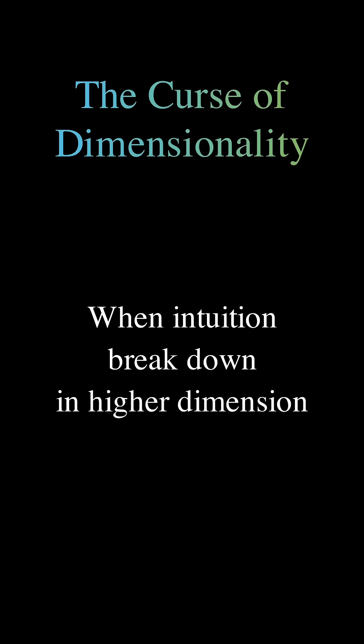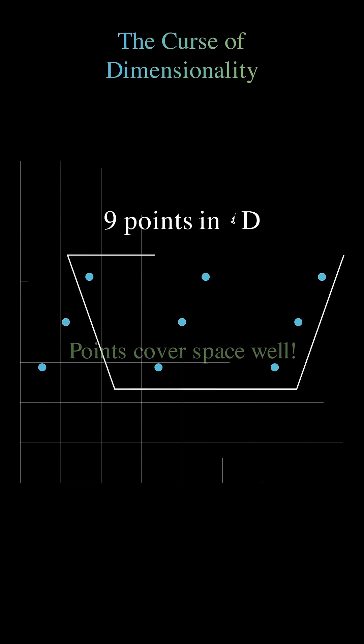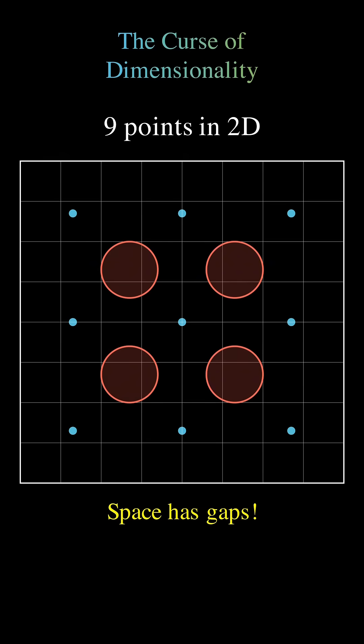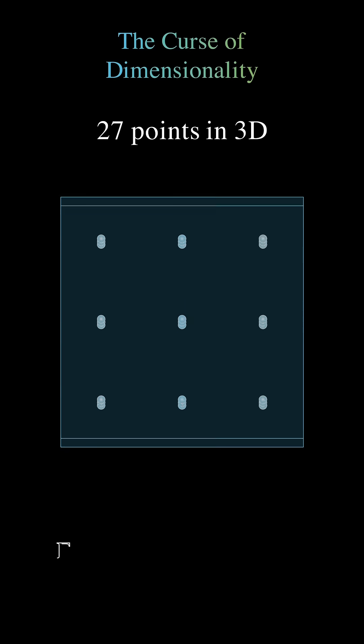The curse of dimensionality happens when our intuition breaks down in higher dimensions. On a 1D line, 9 points cover the space well, but in 2D they leave gaps, and in higher dimensions, the space becomes mostly empty.